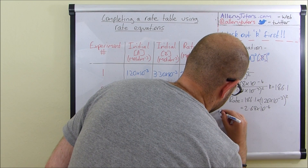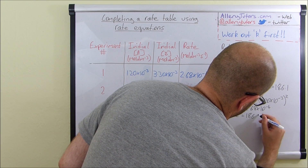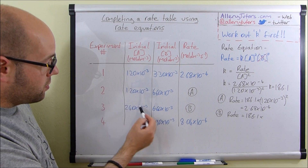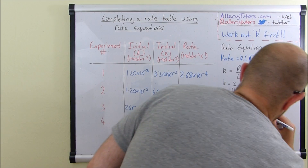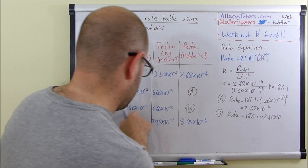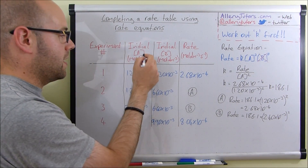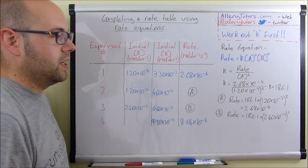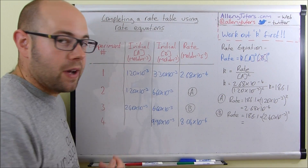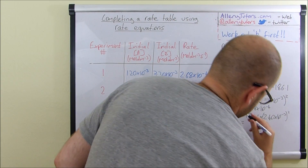For blank 'b' — the rate in experiment three — we do the same: rate = 186.1 × (2.40 × 10⁻³)². Again, make sure you square it because that's the order of the reaction. Put that in the calculator and the value of b should be 1.07 × 10⁻³.